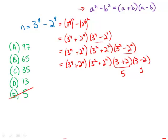3 squared plus 2 squared, that is 9 plus 4, which is 13. 13 is a factor. And in fact, any number that's divisible by both 5 and 13 is also going to be divisible by 5 times 13, which is 65.